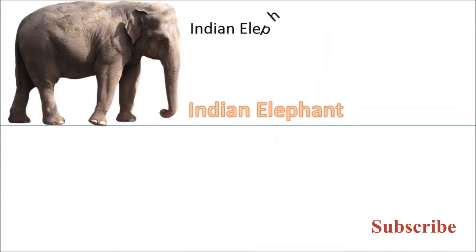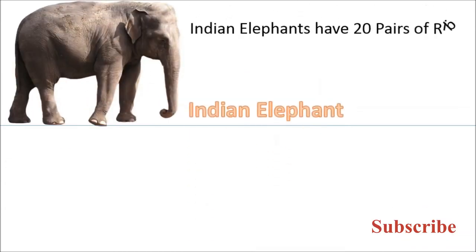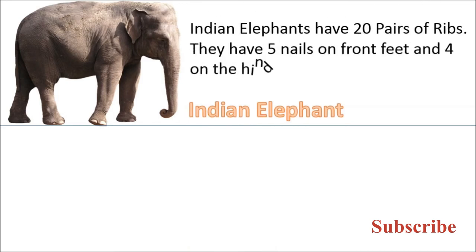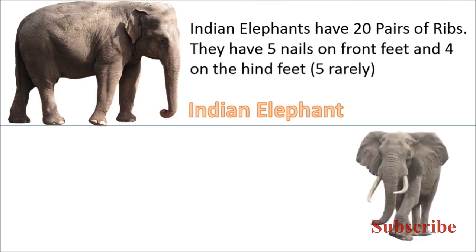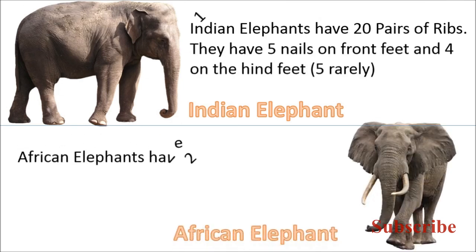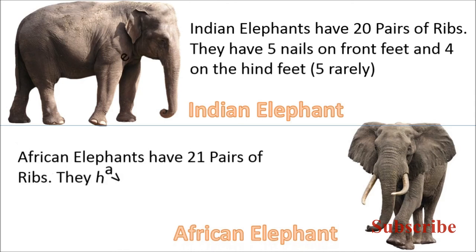Indian elephants have 20 pairs of ribs. They have 5 nails on front feet and 4 on the rear feet. African elephants have 21 pairs of ribs. They have 4 nails on front feet and 3 on the rear feet.